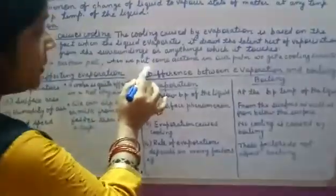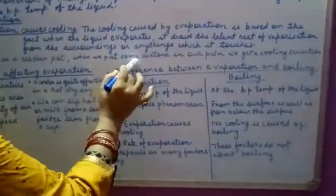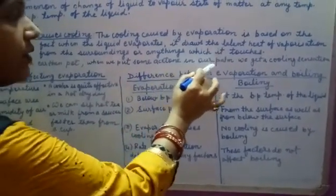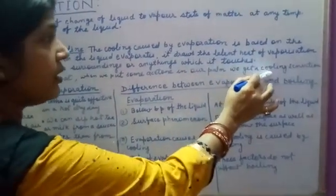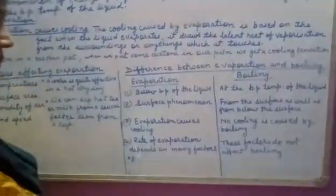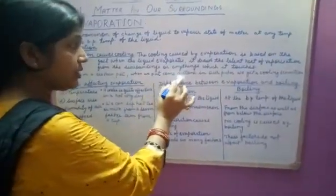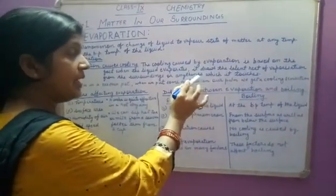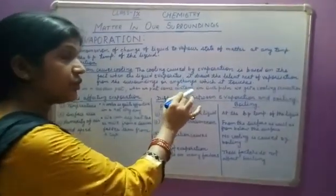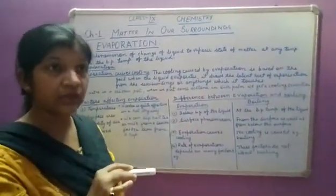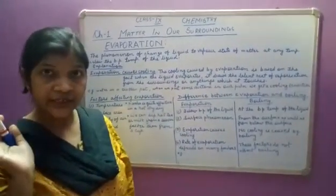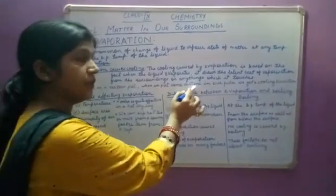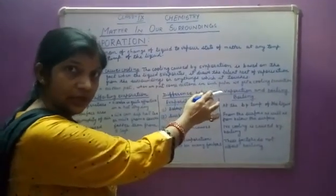One more example: when we put some acetone or perfume on our palm, we get a cooling sensation. Because acetone or perfume absorbs latent heat of vaporization to change its state from liquid to vapor from our palm or hand.